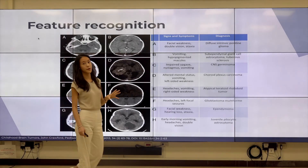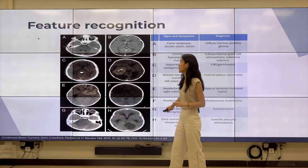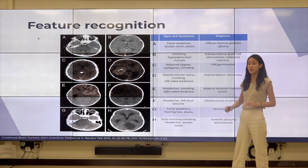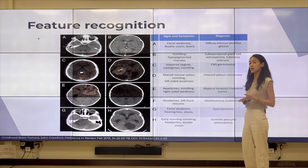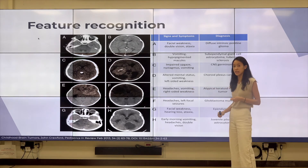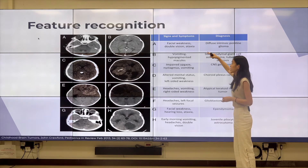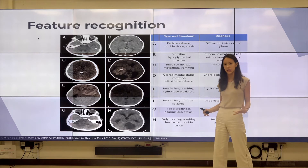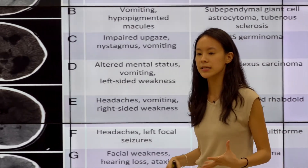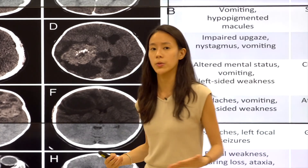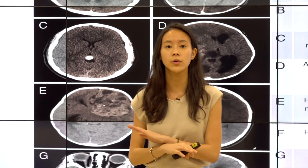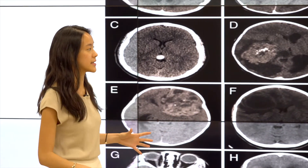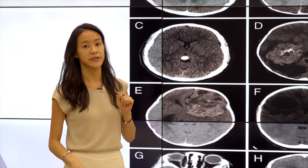For feature recognition specifically, from image A to H these are all different diagnoses. Doctors look at images, interpret them, and then go through the signs and symptoms for each patient before making a good diagnosis. The computer cannot currently do this — it works completely differently from the human brain, which is a very big limitation especially when it comes to feature recognition.